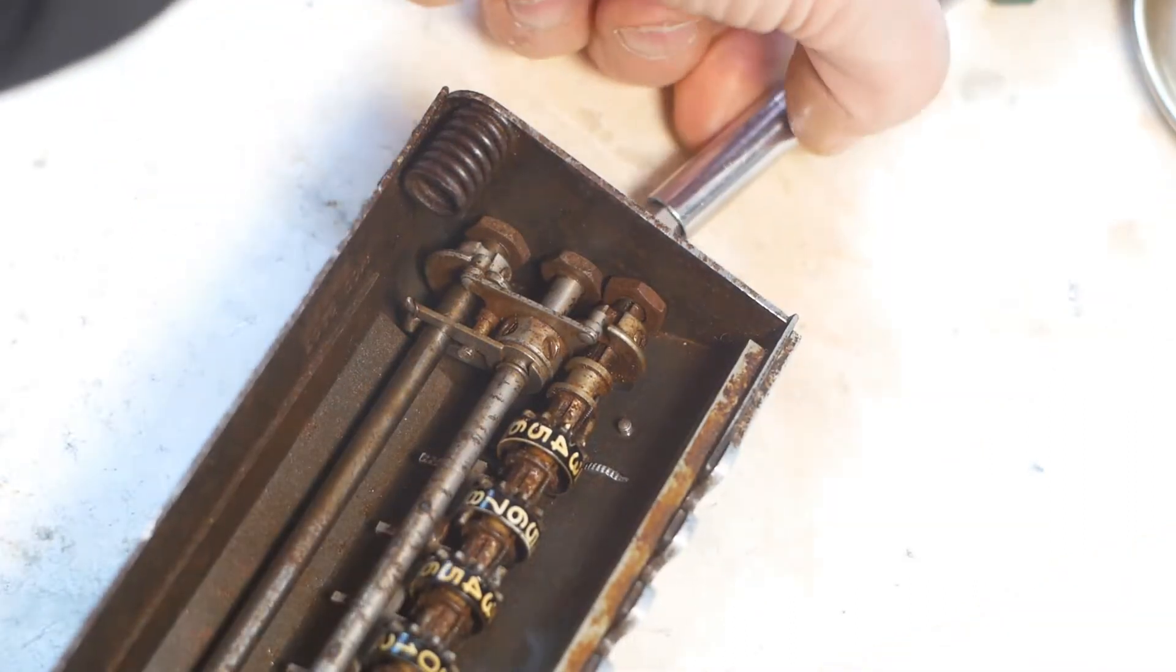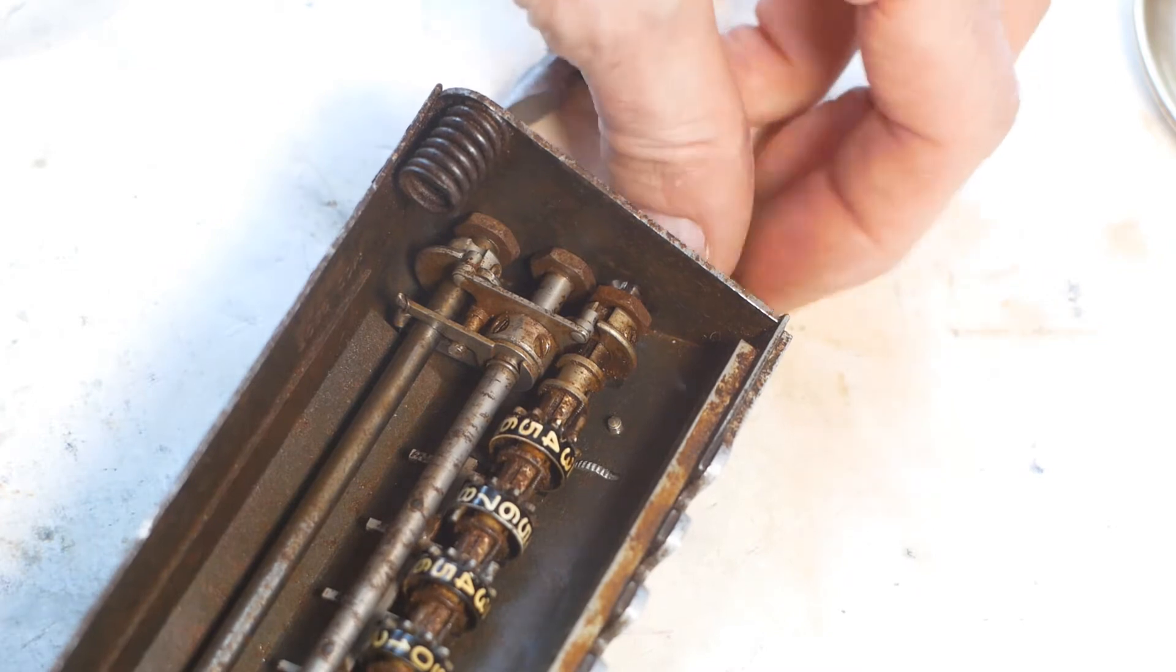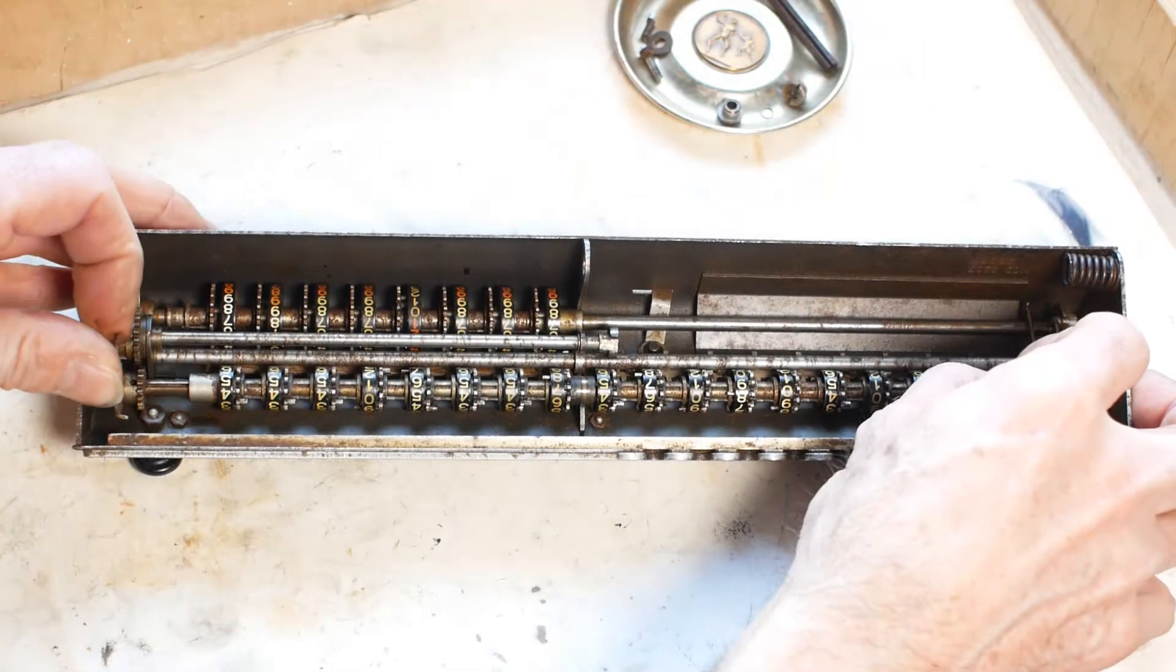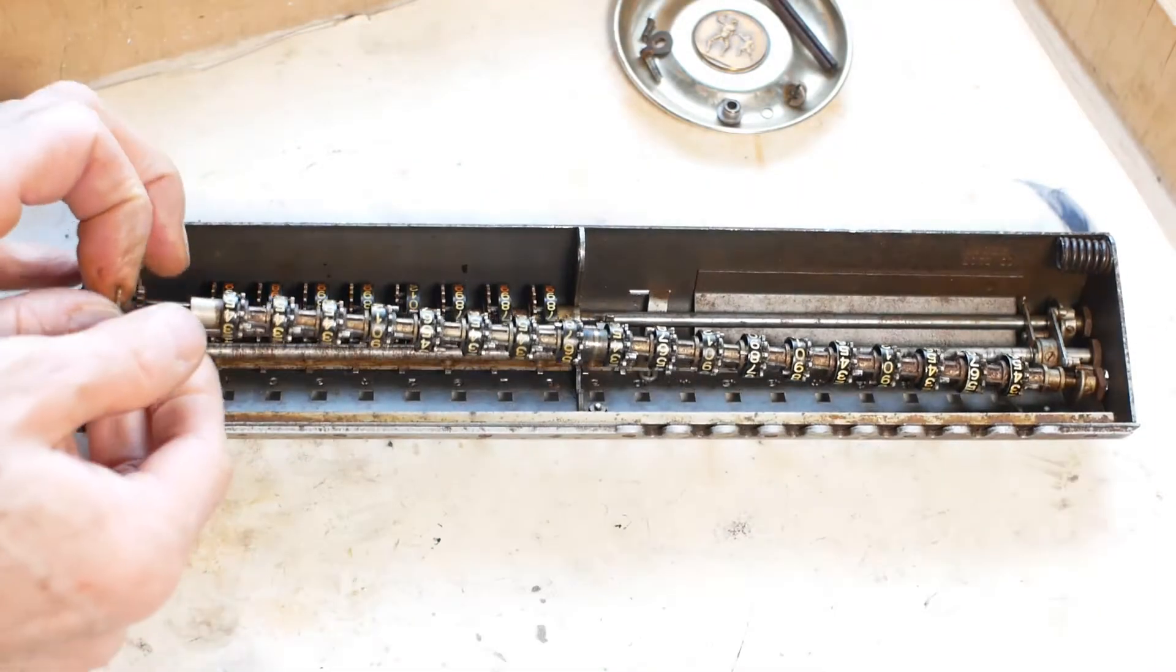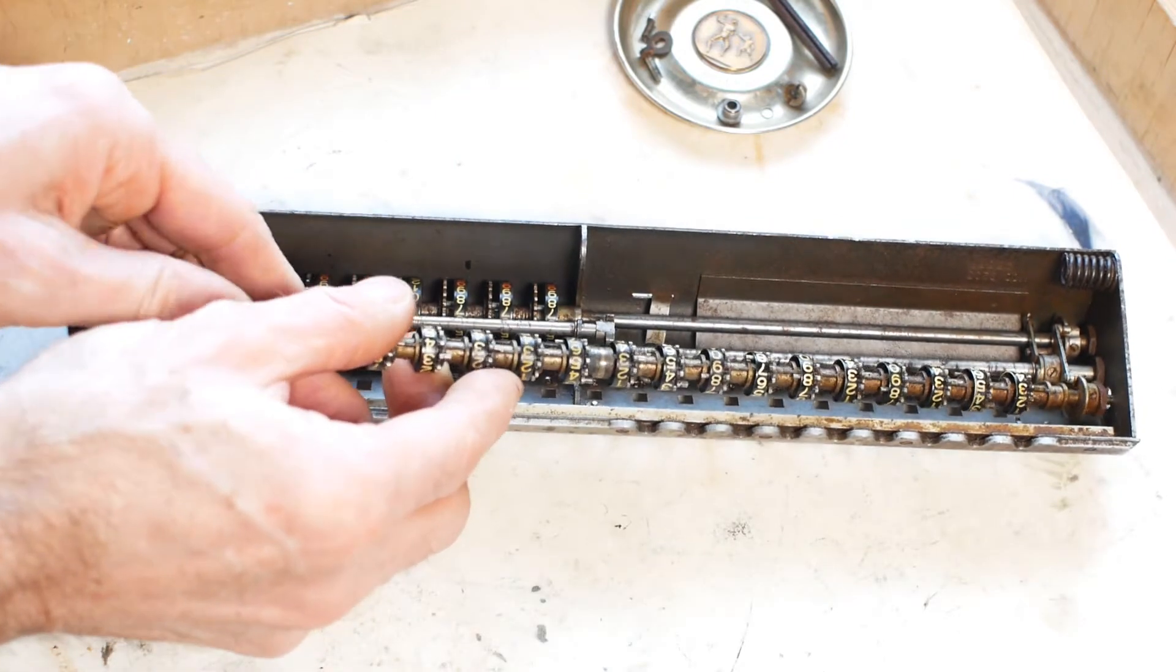This process is repeated for the bearing on the far end of the shaft, again taking note of any shims that might be lurking out of sight. With the two bearings off, it should be possible to carefully jiggle the shaft free at one end, and then remove it completely.